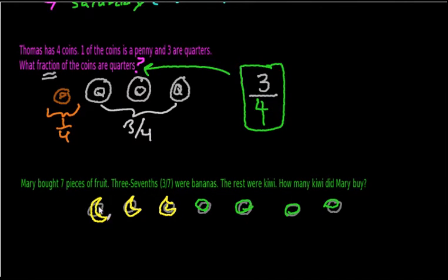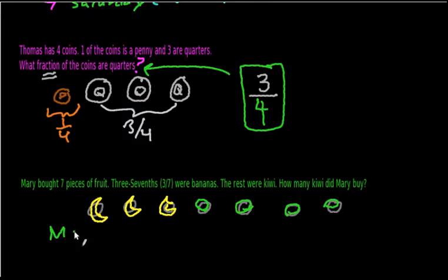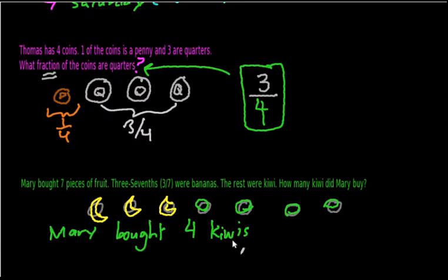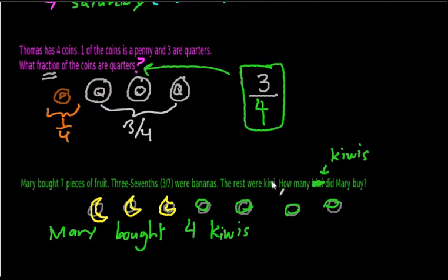In fact, that makes sense. Mary bought seven pieces of fruit. Three out of the seven are bananas, and the rest — one, two, three, four — must all be kiwis. And that means that Mary bought four kiwis. The plural of kiwi is kiwis, so the rest were kiwis. I'm giving you a bit of a grammar lesson in addition to a math lesson here. Hopefully that made sense.